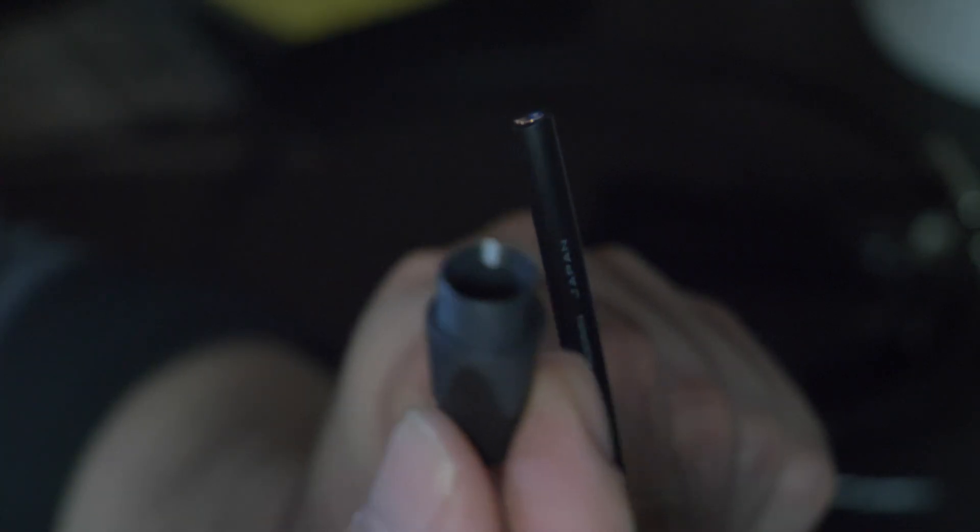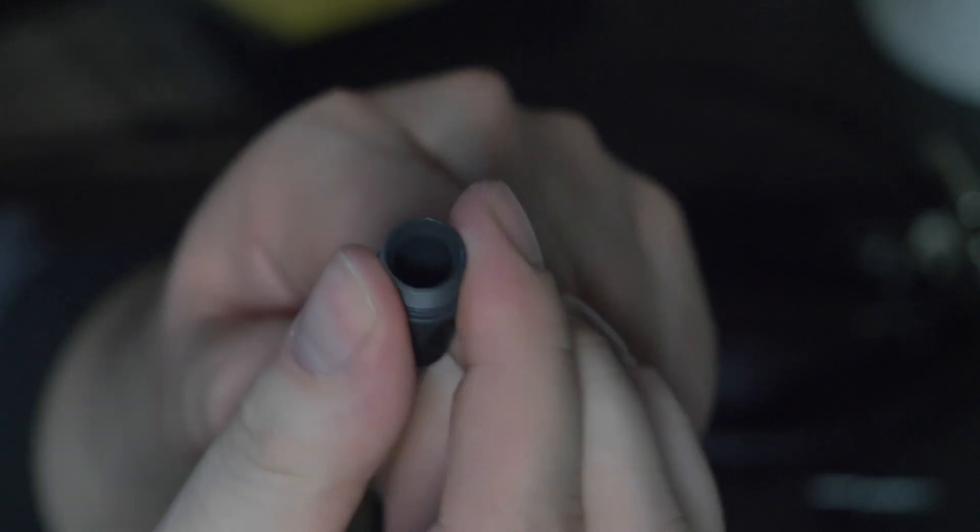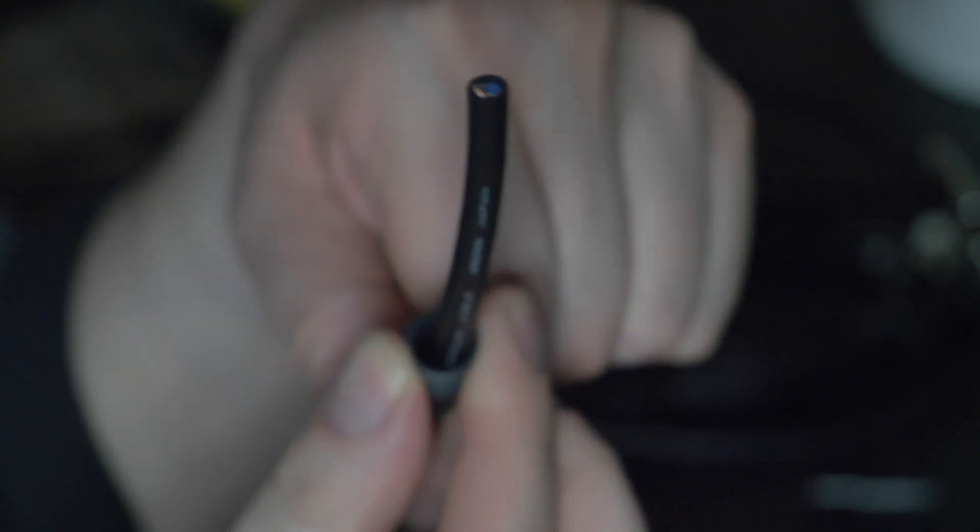Next, before going any further, add your boot ends before stripping your wire ends. It's much easier to do it this way, but it's also easy to forget, which I did several times.